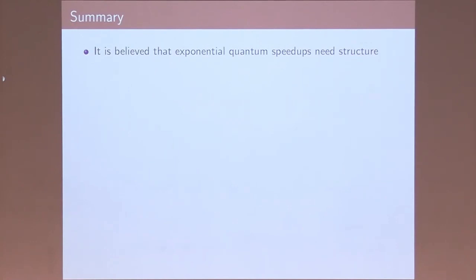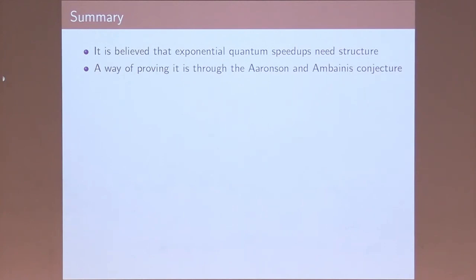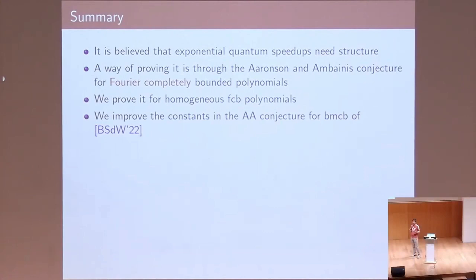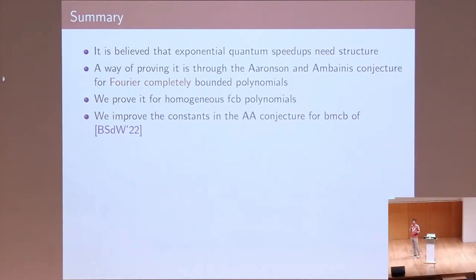To recap: the question is whether quantum speedups need structure to be exponential. The community approach is to prove the Aaronson-Ambainis conjecture, but it suffices to prove it for Fourier CB-bounded polynomials. This was done for the homogeneous case, and the result of van Apeldoorn, Sien, and de Wolf was reproved with a simpler proof and better constants.